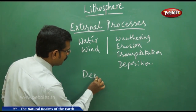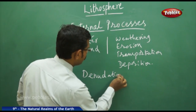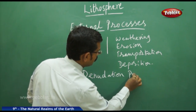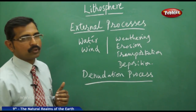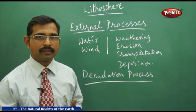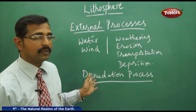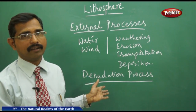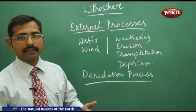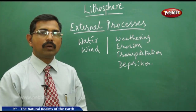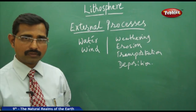Due to the denudation process, third-order landforms are produced. Deltas, for example, are third-order landforms that form near the mouth of the sea. Now let's see how air and water transform the structures of mountains.